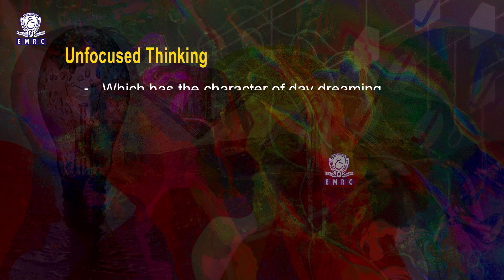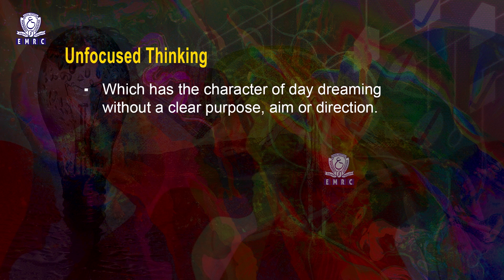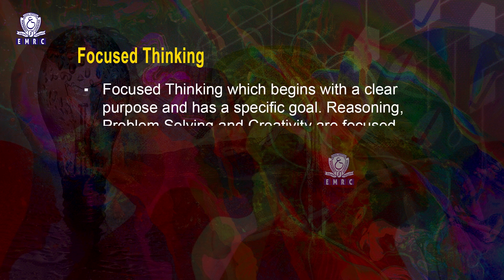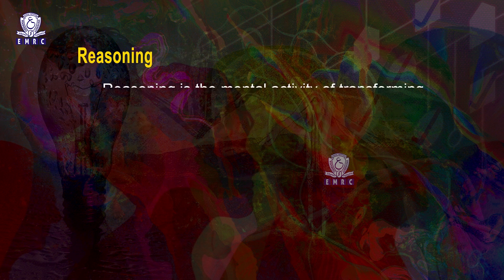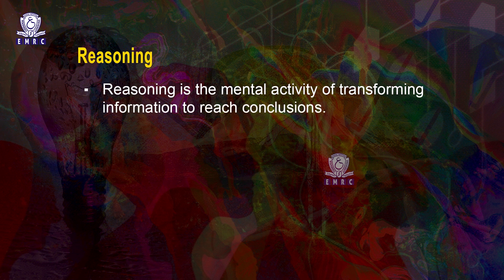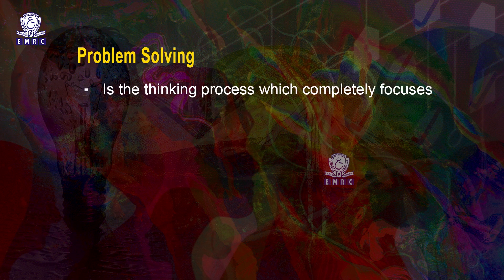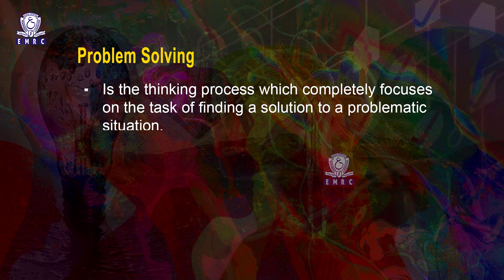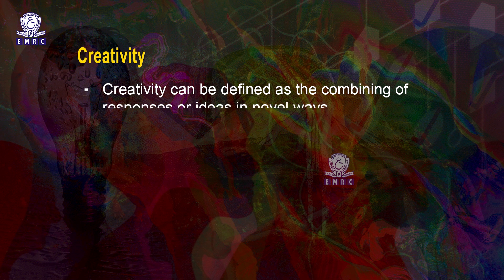Types of thinking: the term thinking is used to refer to more than one specific activity, suggesting there may be different types. Unfocused thinking has the character of daydreaming without a clear purpose, aim or direction. Focused thinking begins with a clear purpose and has a specific goal. Reasoning, problem solving and creativity are focused thinking. Reasoning is the mental activity of transforming information to reach conclusions. Problem solving focuses completely on finding a solution to a problematic situation. Creativity can be defined as the combining of responses or ideas in novel ways.